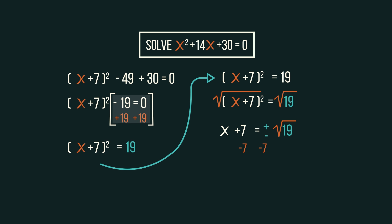We're nearly there with the solving. Subtract 7 from both sides and we get x equals negative 7 plus or minus square root 19. And we have our two answers.